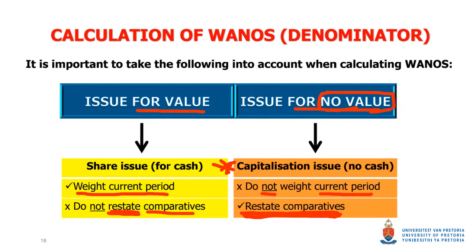To summarize simply: for a for-value issue, we weight in the current period and do not restate the prior year. For a not-for-value or no-value issue, we do not weight in the current period and we do change the comparatives (prior year). The reasoning: with no-value, there was no new cash inflow, the pie didn't get bigger, but the thing that caused the capitalization — the original share — was already in existence in the prior year, so we must restate.